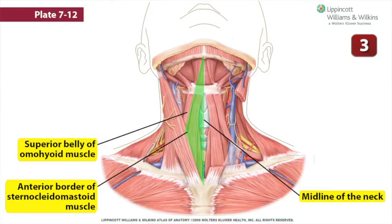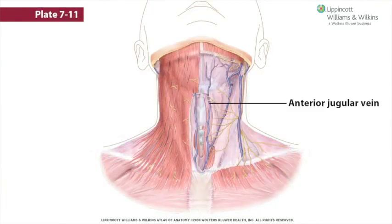The muscular triangle is bordered by the midline of the neck, the anterior border of the sternocleidomastoid, and the superior belly of the omohyoid. The anterior jugular vein may run along the roof of this triangle, just lateral to the midline on its way to the root of the neck.